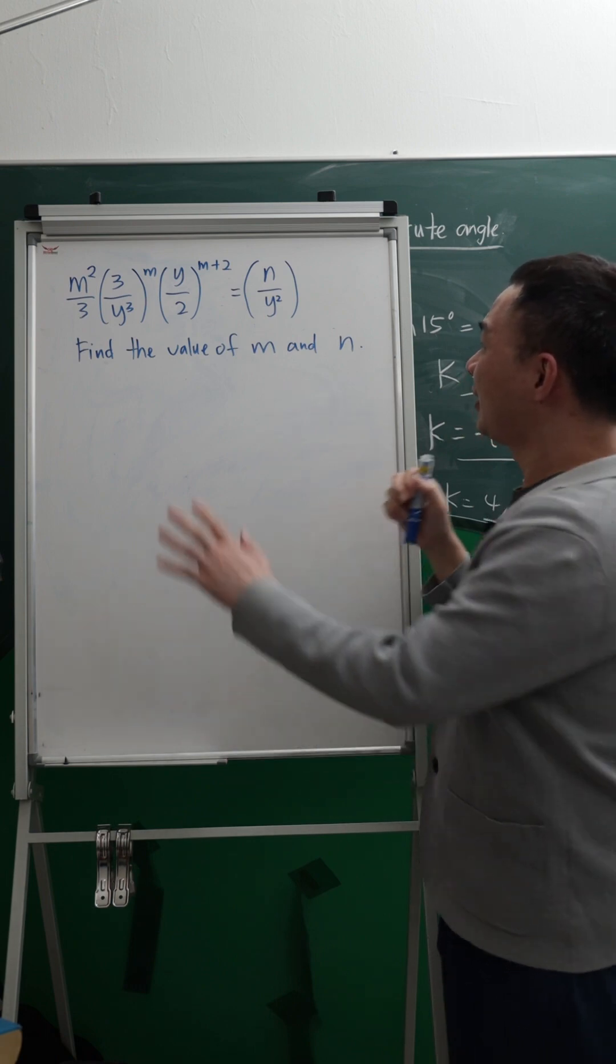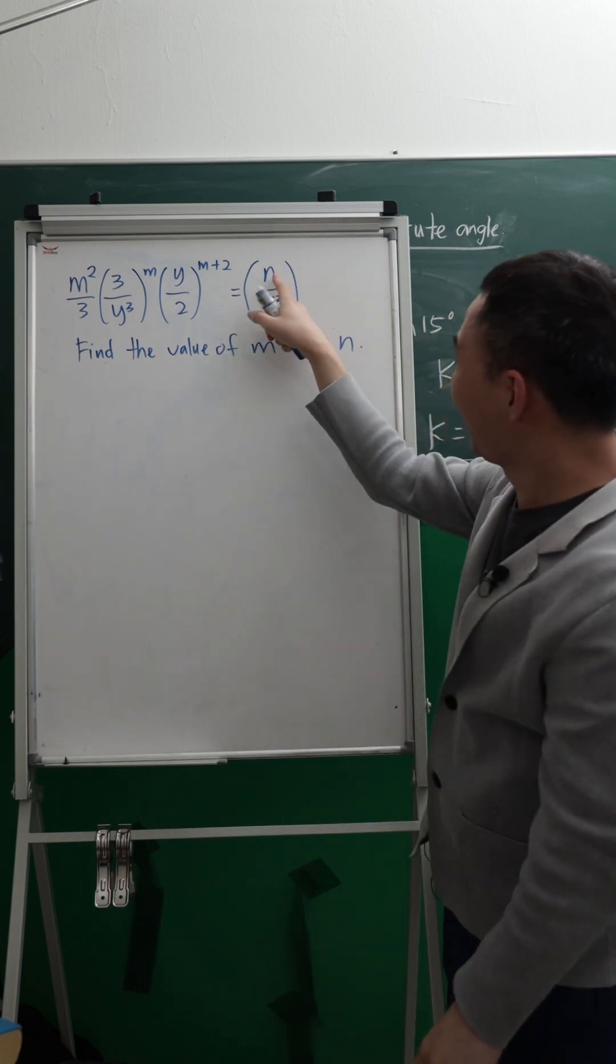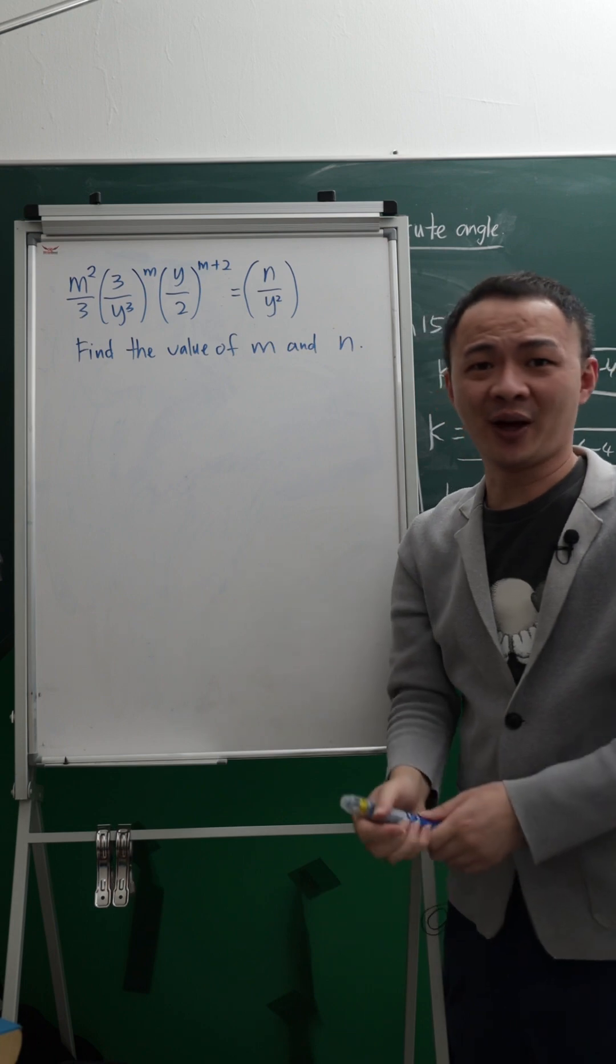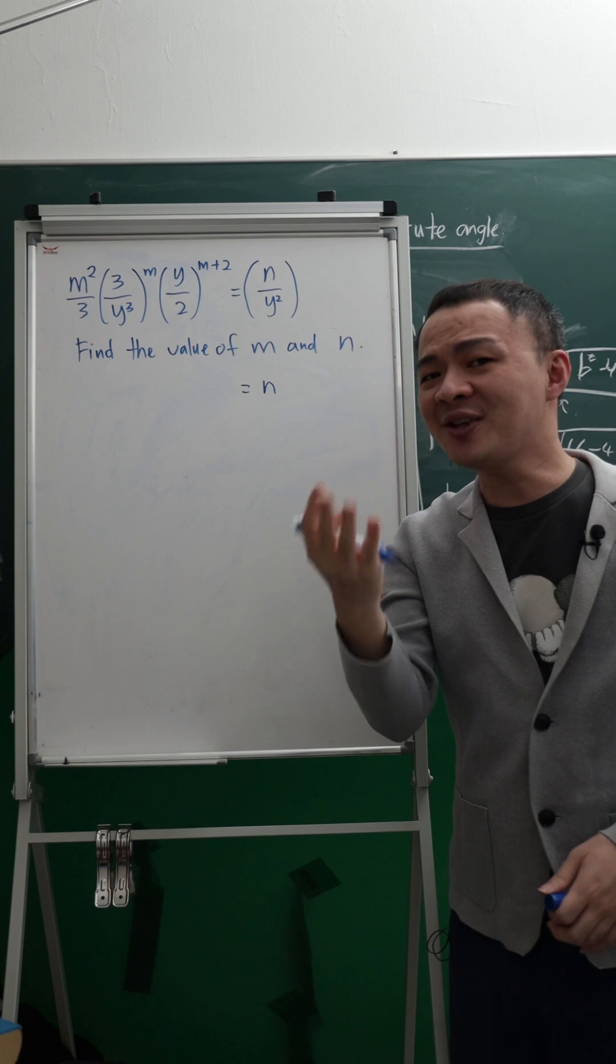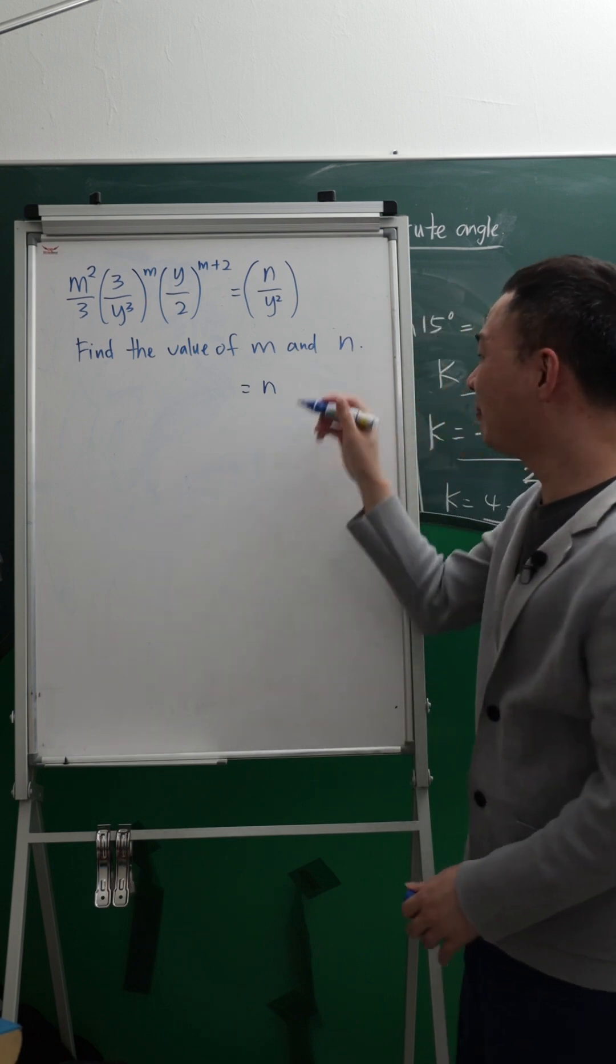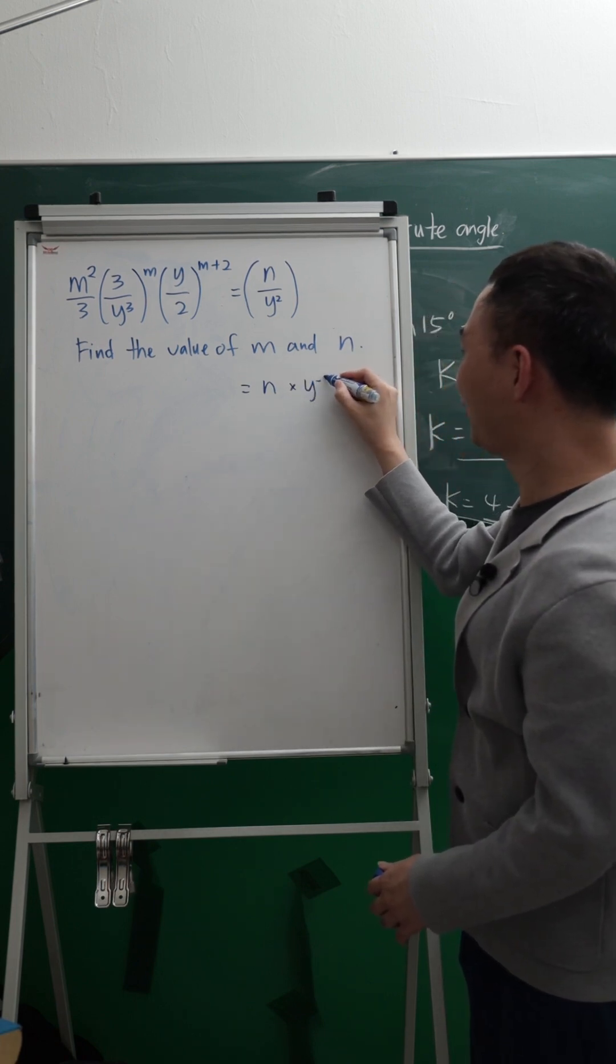So first thing is, I will analyze here. I have M² divided by Y square, so I would call this one as M² divided by Y square. Actually, it's same meaning like multiply Y power of negative 2.